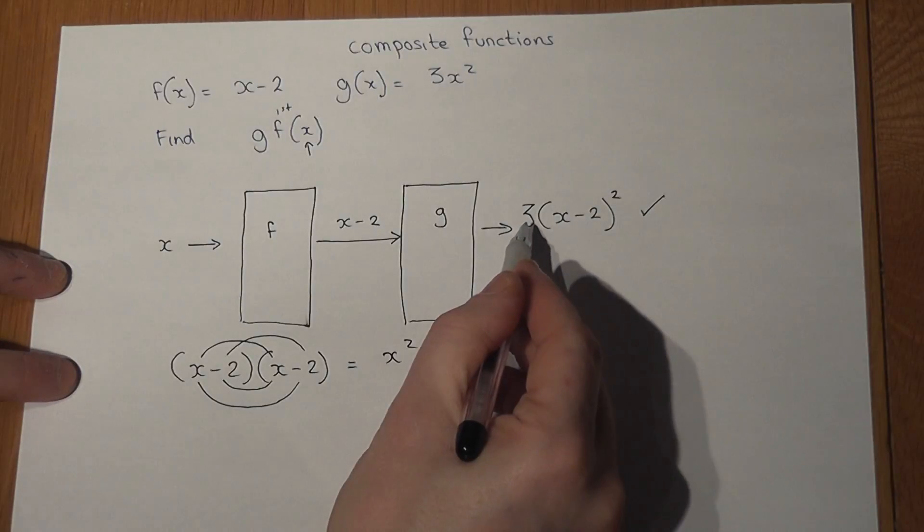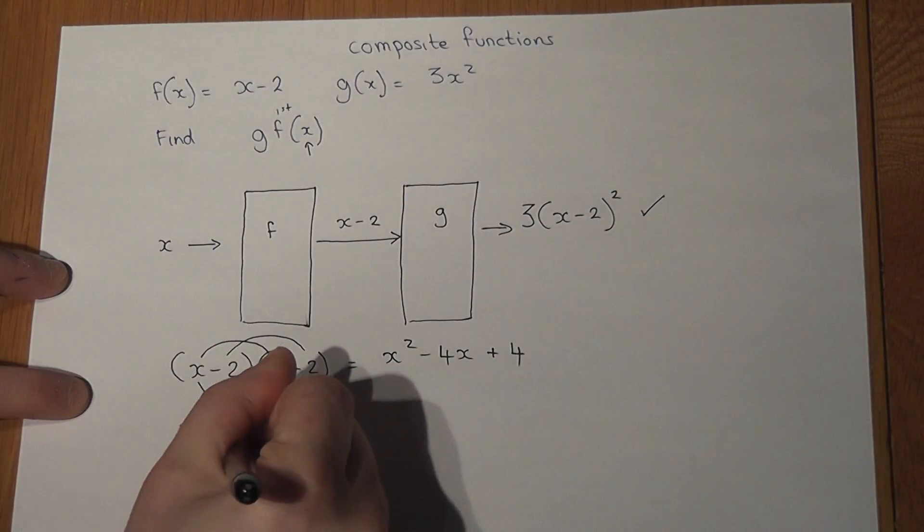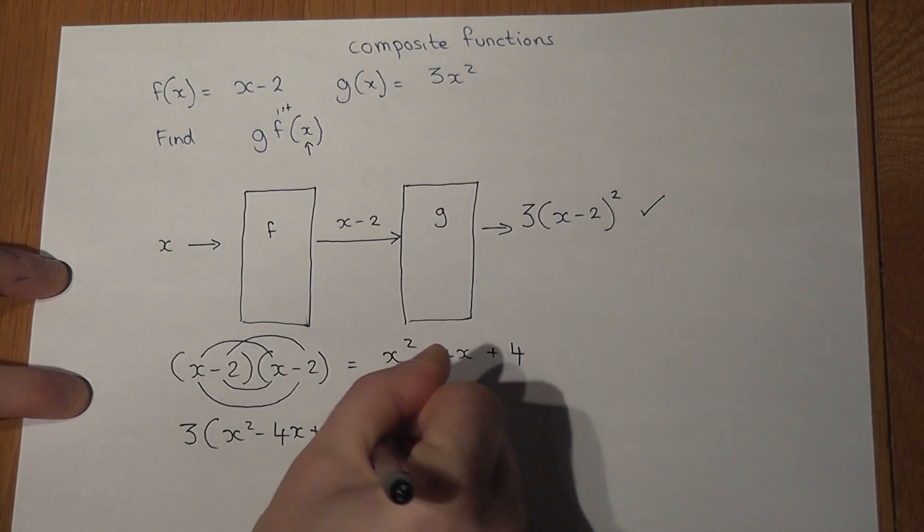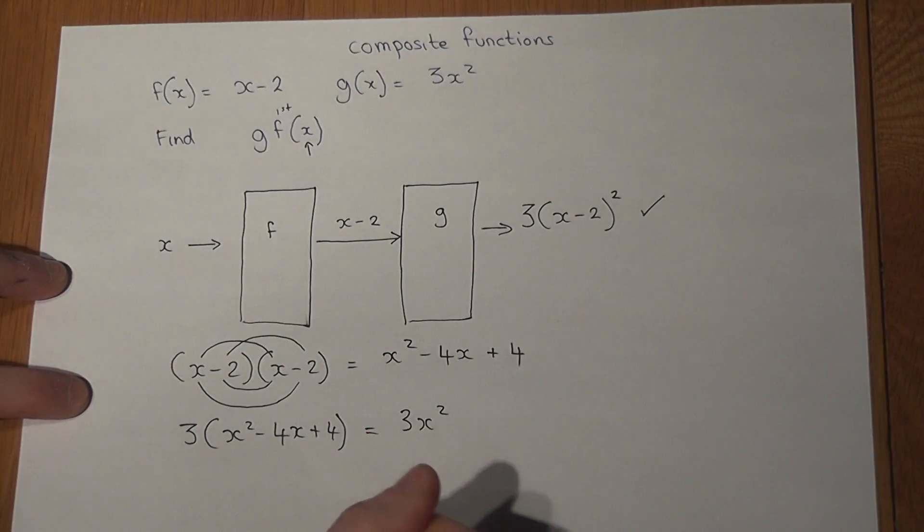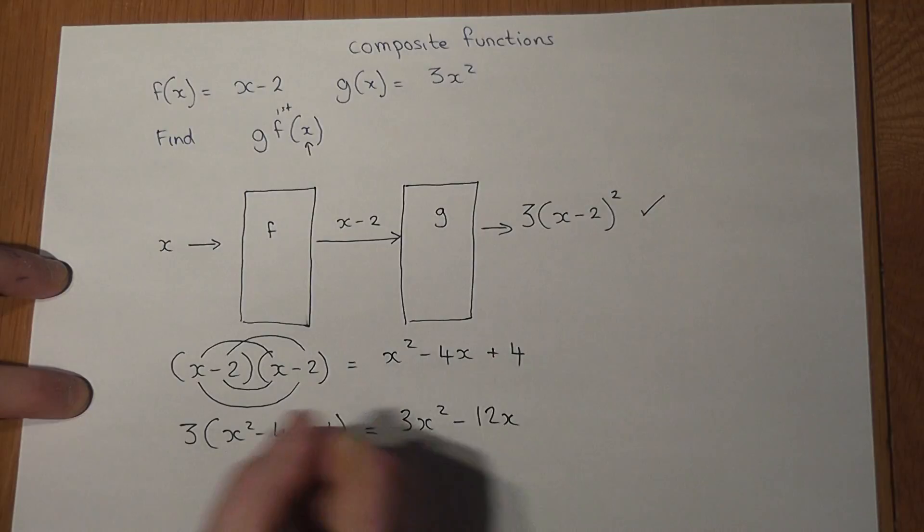There's a three here which means that we're going to multiply this entire thing by three - three lots of this entire expression. So three lots of this entire expression becomes 3x squared, take away three times four is 12x. Three